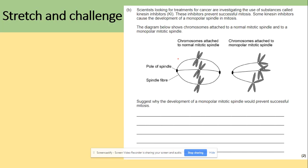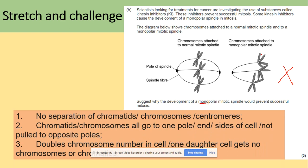Another question asks why a monopolar mitotic spindle fibre would prevent successful mitosis. In a normal cell the spindle extends from both poles, but with a monopolar spindle fibres only originate from one pole. This means anaphase will not be successful: sister chromatids won't be pulled apart to opposite poles. As a result, one daughter cell will end up with double the number of chromosomes and the other cell will receive none.